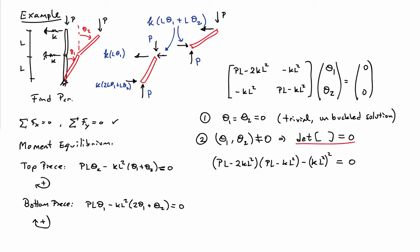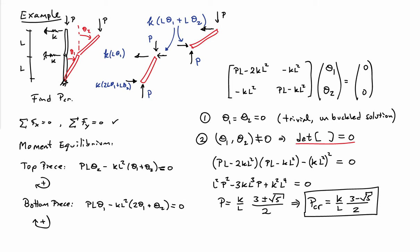Taking the determinant, I end up with a polynomial in P. Multiplying it all out and applying the quadratic formula, I can solve for the values of P that allow non-trivial solutions. I get P equal to (K/L) times (3 ± √5) / 2. There are two values at which secondary solutions emerge. It's the smaller of these two values that will be the critical buckling load, so I pick the minus sign. That gives me the critical buckling load: P_critical = (K/L) × (3 − √5) / 2.